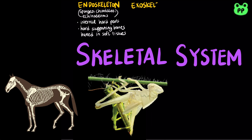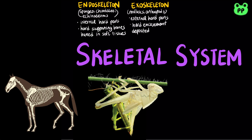Exoskeleton is found in most mollusks and arthropods. It is an external hard encasement deposited on the surface of an animal. Arthropod exoskeletons consist of 30–50% of the polysaccharide chitin.